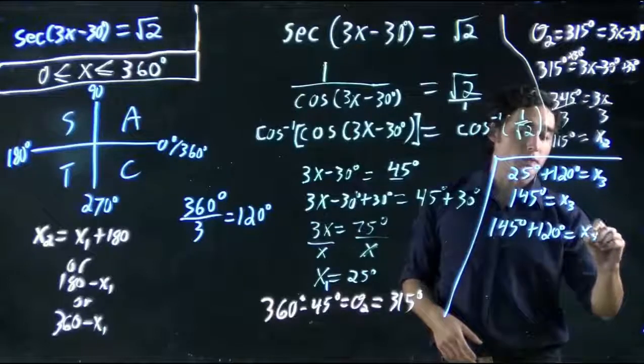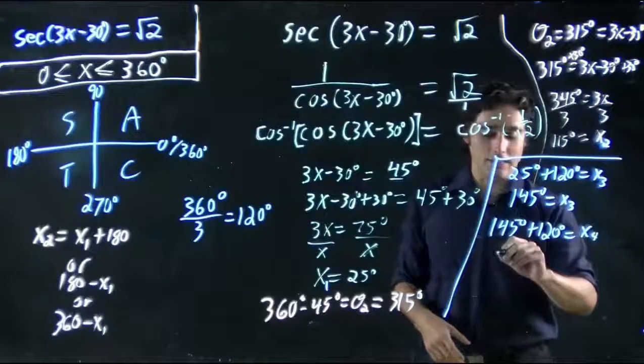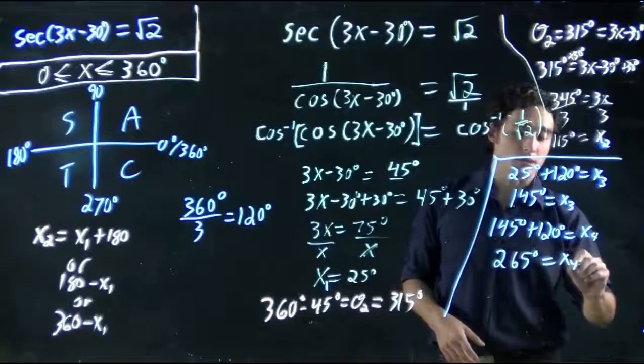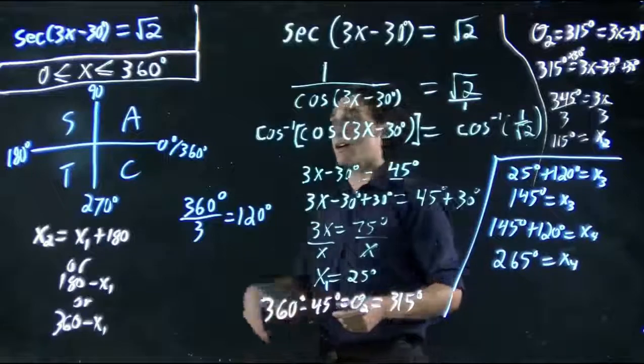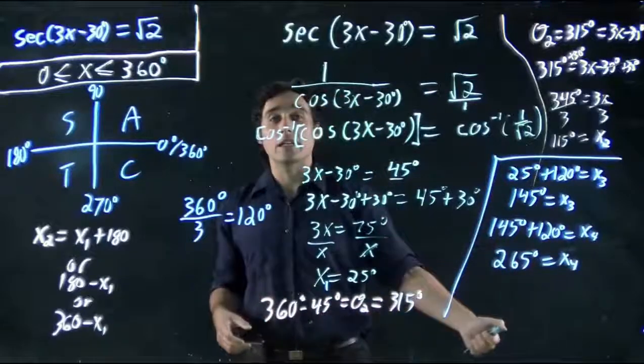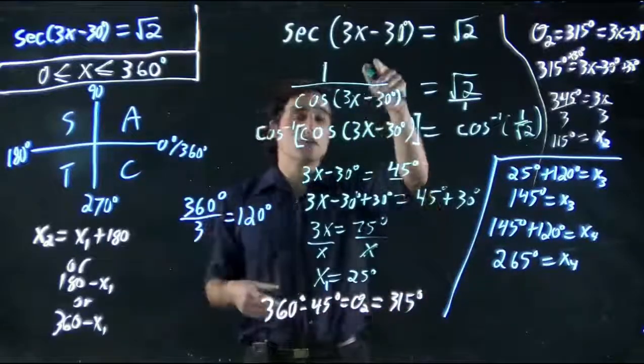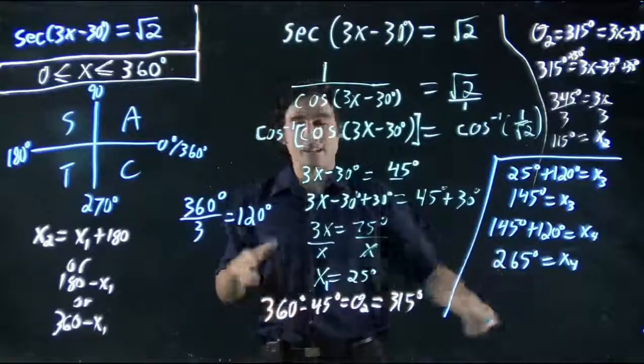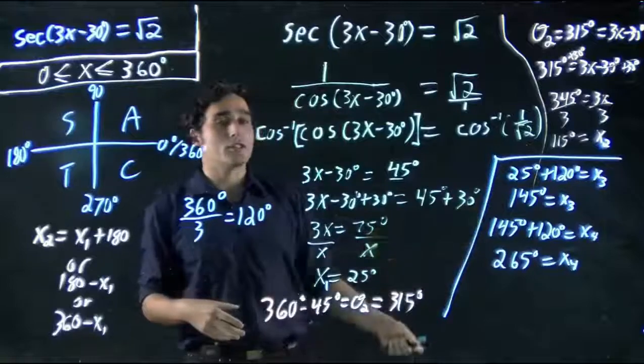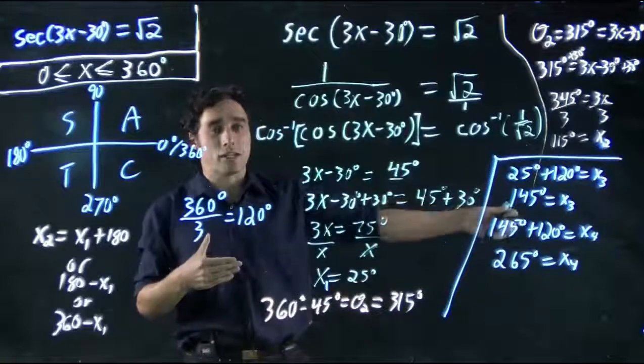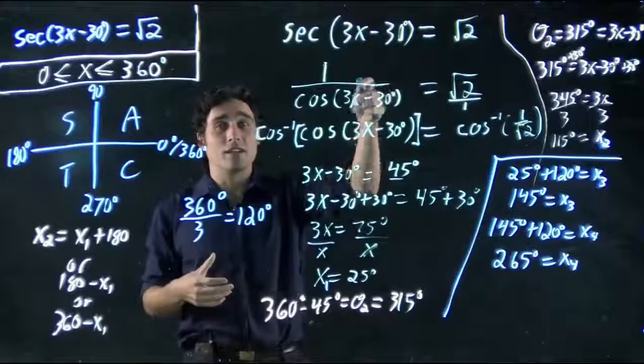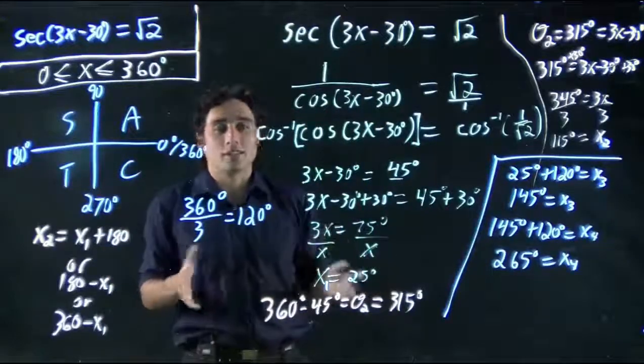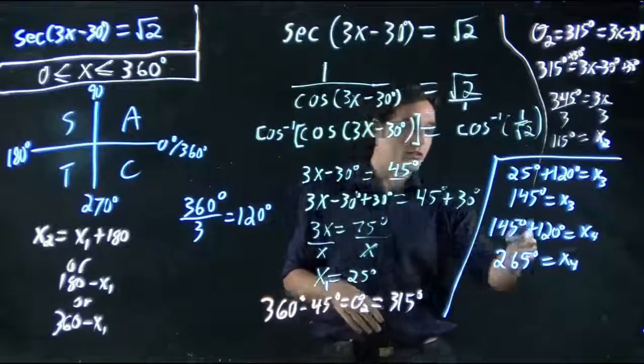145 plus 120 should also be a solution. We can call that x4. That's the same as 265 degrees, which would be our fourth possible solution. And, theoretically, another 120 on top of that would give us another solution. But that would actually be 385 and would be outside the range we're interested in. You keep adding this period onto the solutions you found until you go outside the range. Because, sure, technically that would solve the equation, but it's outside the range we're interested in. So it's rejected. So these are two viable solutions.